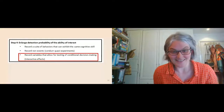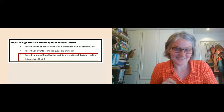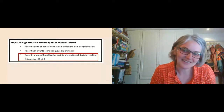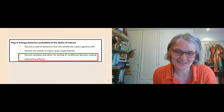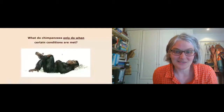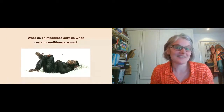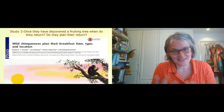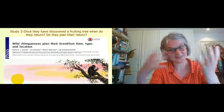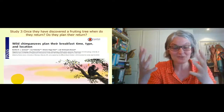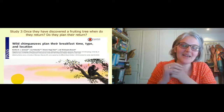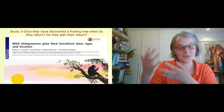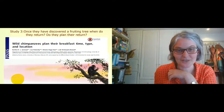This ability was also supported by work on captive chimpanzees using an experimental approach. Lastly, I want to discuss the step of recording variables that allow testing of conditional decision making and interactive effects — what chimpanzees only do when certain conditions are met. I did this in the context of a study on planning behavior: once they have discovered a fruiting tree with lots of fruit at the beginning of a season, when do they return? Do they plan their return and, for example, depart earlier for certain fruits than for others?